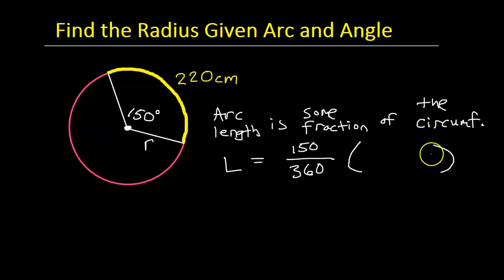Well, what is the formula for the circumference of a circle? That is 2πr. So this is the formula for the arc length on a circle. The arc length is some fraction of the whole circumference.